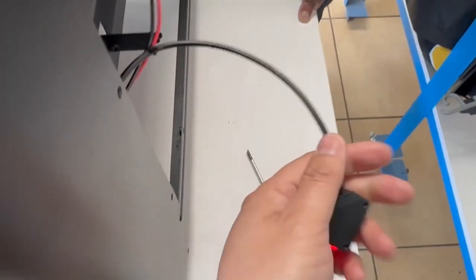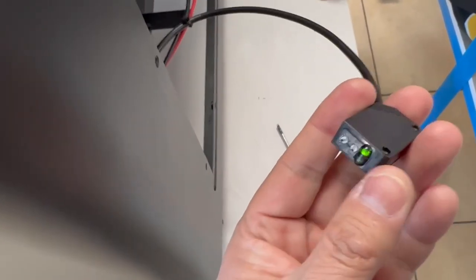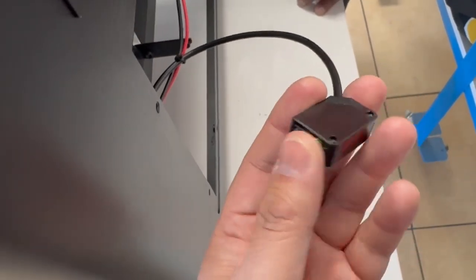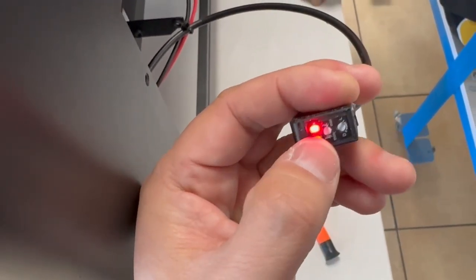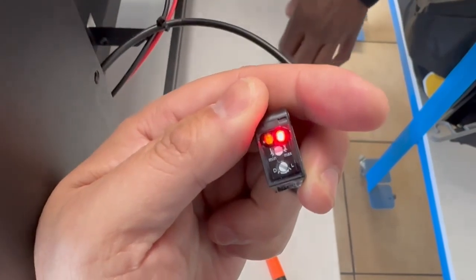So when it's always triggering or not triggering, you need to take it out and change the settings by turning the first knob. This one says max and min.